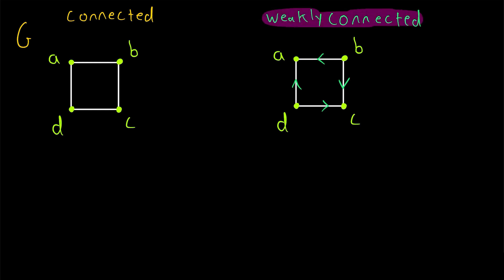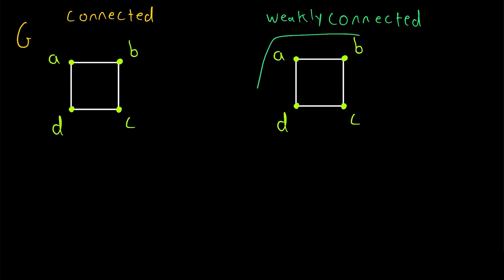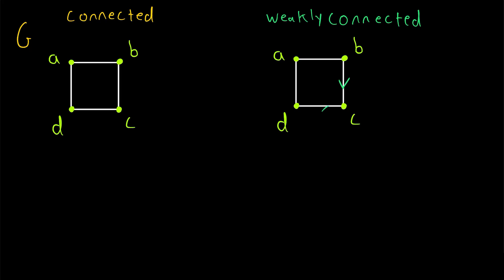When we say a directed graph is weakly connected, that means that its underlying graph is connected. The underlying graph is created by just getting rid of the direction on the edges of the directed graph. So if the underlying graph of a directed graph is connected, then the directed graph itself is called weakly connected, which is sometimes just called connected. But to avoid confusion, I'll usually say that it is weakly connected.